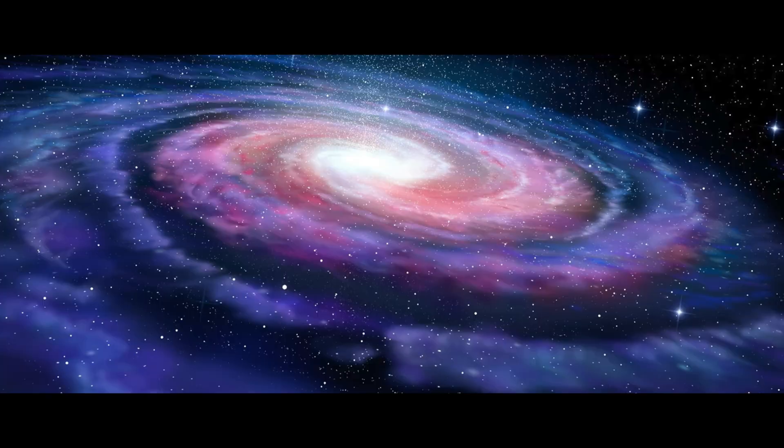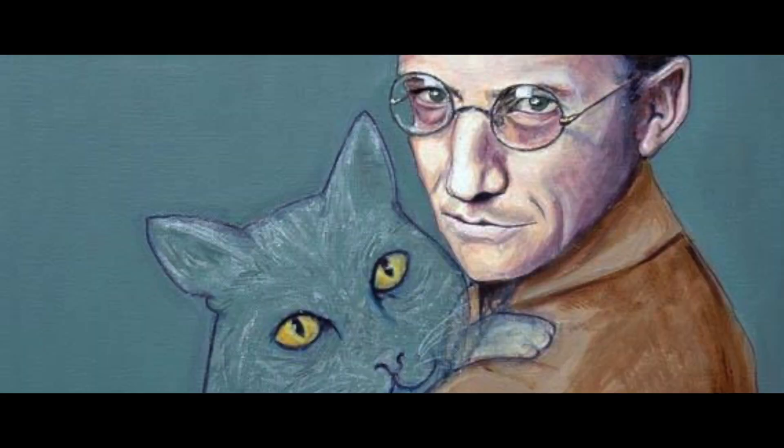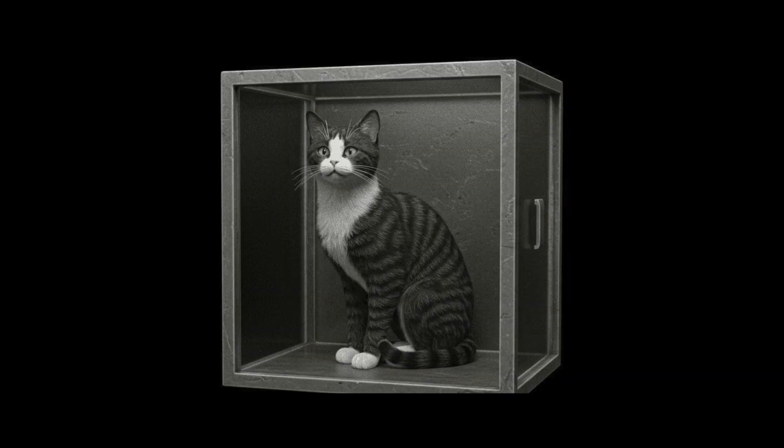For example, before we measure an electron's position, it occupies every possible position simultaneously. Schrödinger utilised his cat analogy to illuminate the implications of this principle. Until we open the box and observe the cat's state, it remains both alive and dead, a predicament mirroring the behaviour of quantum particles.